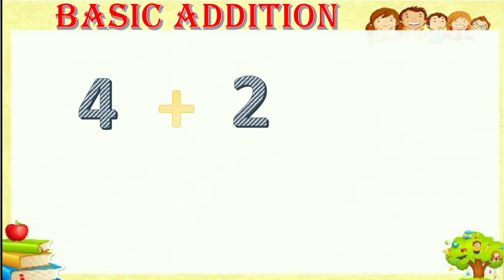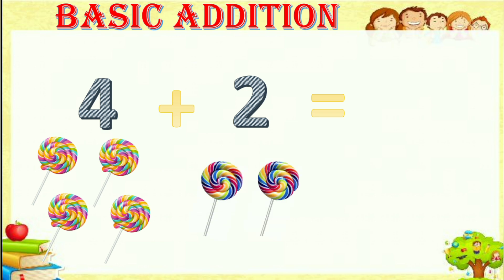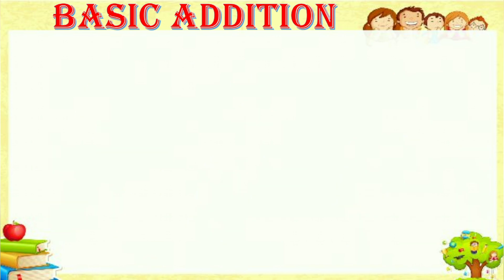Next, four plus two equals. For four we have one, two, three, four — four lollipops. And for two we have one, two — two lollipops. So totally we have to count one, two, three, four, five and six — total we have six lollipops.